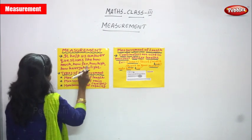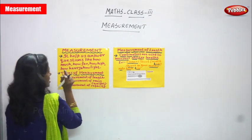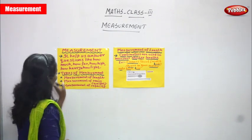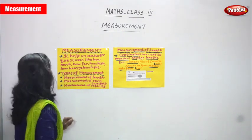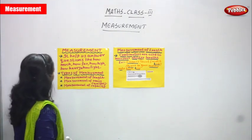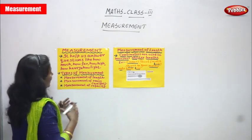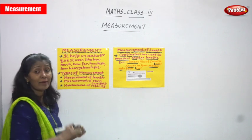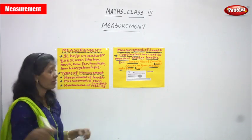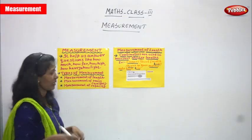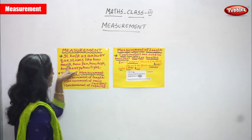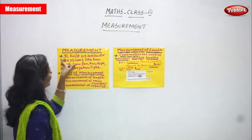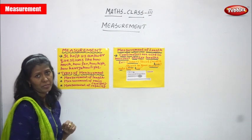Measurement helps us answer questions like how much, how far, how high, how heavy, and how light. Generally it is based on the object. So these are the questions — if you ask them, you can get the answer from measurement.